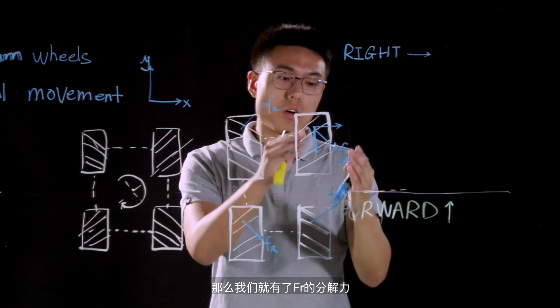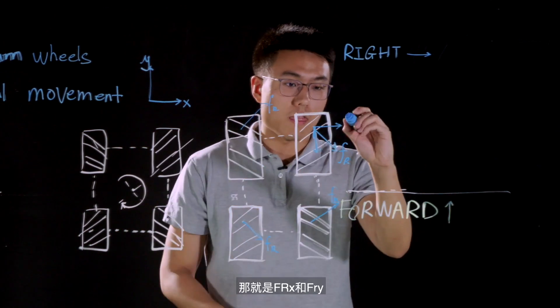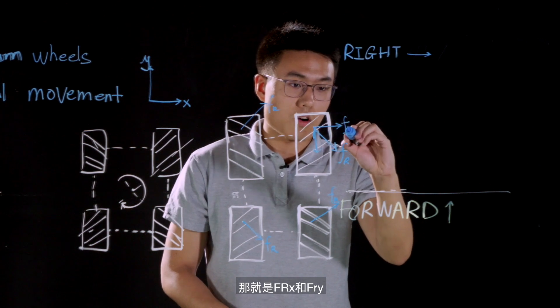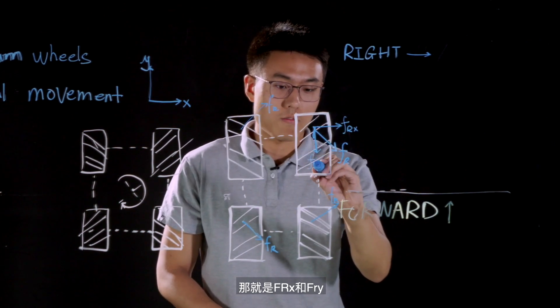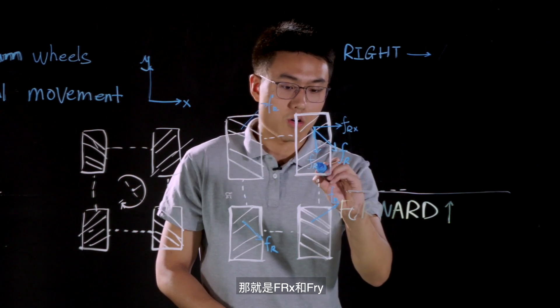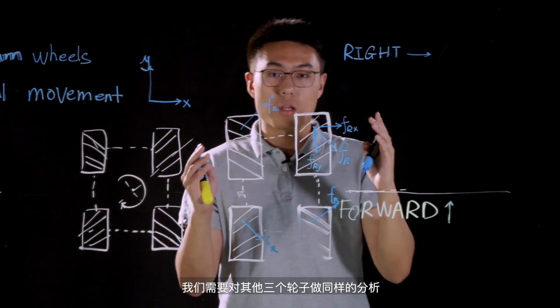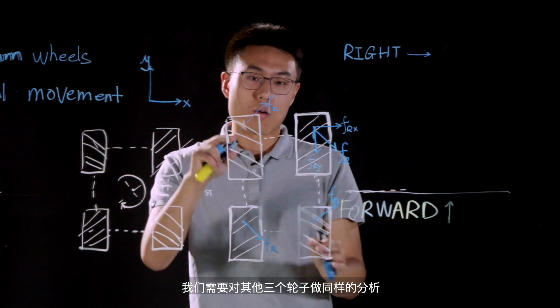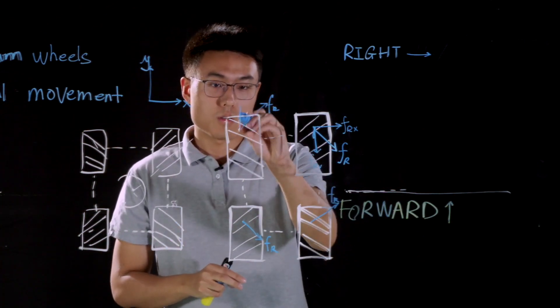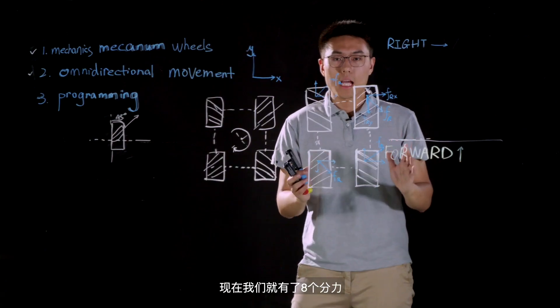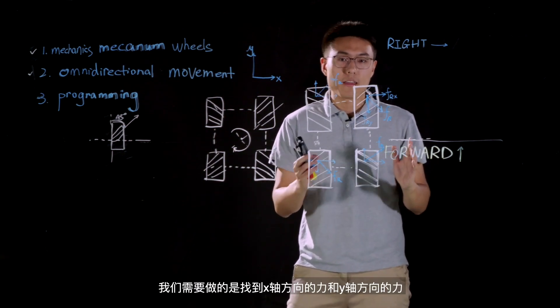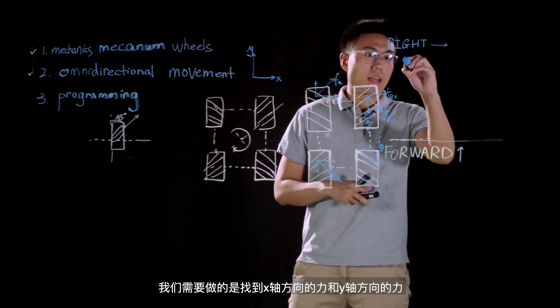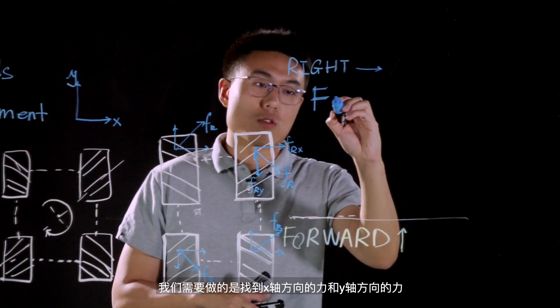Thus, we have component forces of this FR. And that is, FRX, and FRY. And we can do the similar analysis on the other three frictional force. Okay, now we have eight component forces here. And what we need to do is to find the net force on X axis and Y axis respectively.